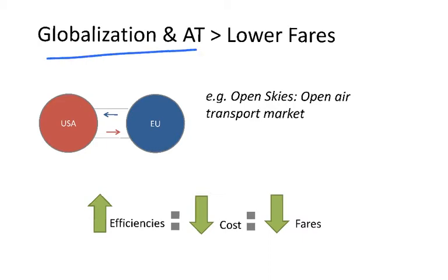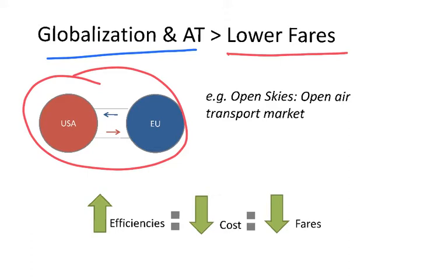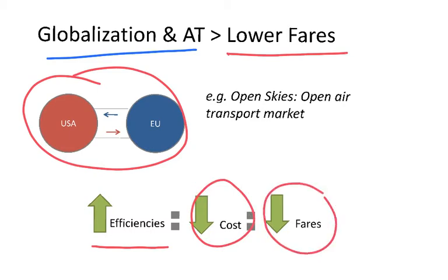Globalization and air transport have produced different effects — one, for instance, is lower fares. When the US and Europe made the Open Sky Agreement, it meant more competition, which led to certain efficiencies in the system, lower costs, and ultimately lower fares. So we see the contribution of globalization and transport in producing lower fares.